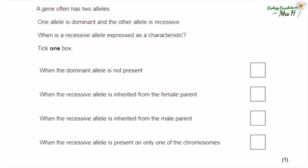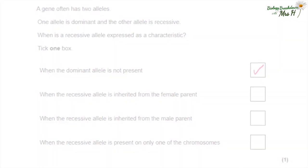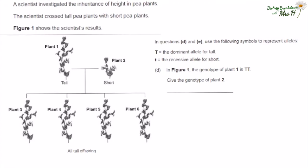A gene often has two alleles — one allele is dominant and the other is recessive. When is a recessive allele expressed as a characteristic? You're only going to see that recessive characteristic if there are two recessive alleles present — so when the dominant allele is not present.